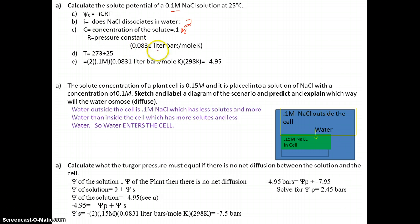The concentration of solute is 0.1 M, which is given. R is the pressure constant, and you don't have to memorize this nor the formula because that's given on your formula sheet. Temperature equals 273 plus 25 degrees Celsius to convert it into Kelvin.